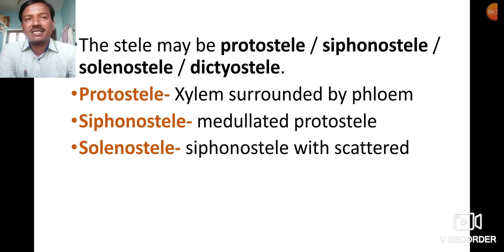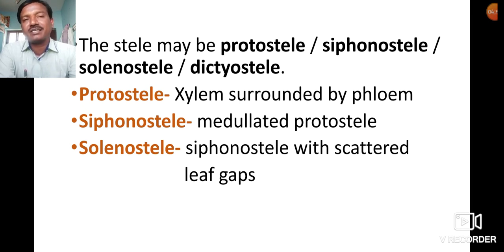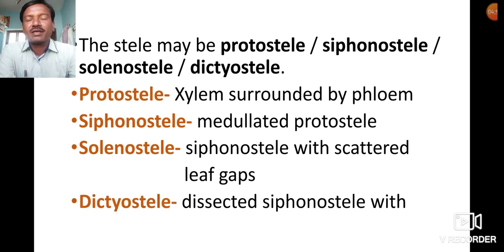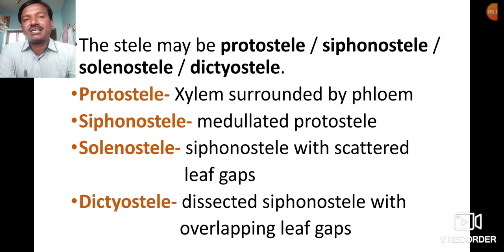Solenostele means siphonostele with scattered leaf gaps — it is a medullated protostele that contains leaf gaps. Dictyostele means dissected solenostele with overlapping leaf gaps. So: protostele has xylem surrounded by phloem; siphonostele is medullated protostele; solenostele is siphonostele with scattered leaf gaps; and dictyostele is dissected siphonostele with overlapping leaf gaps.